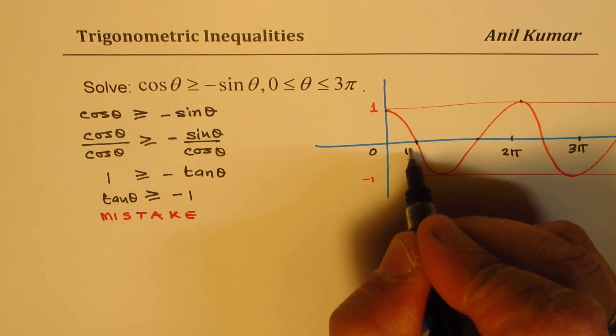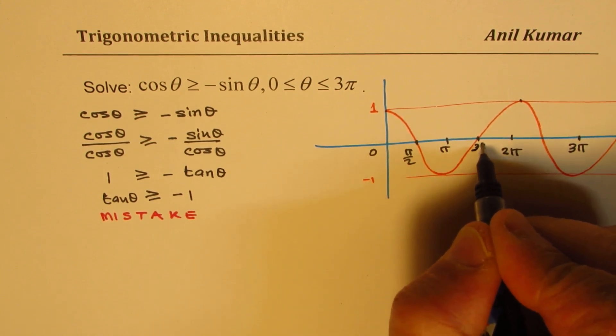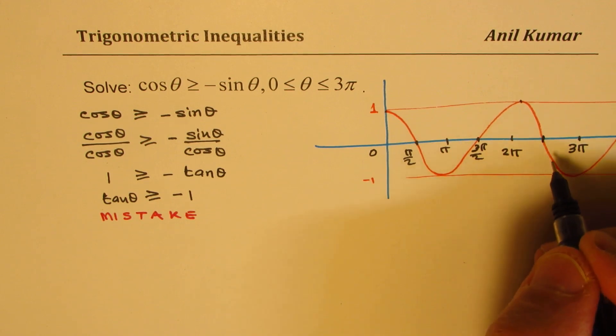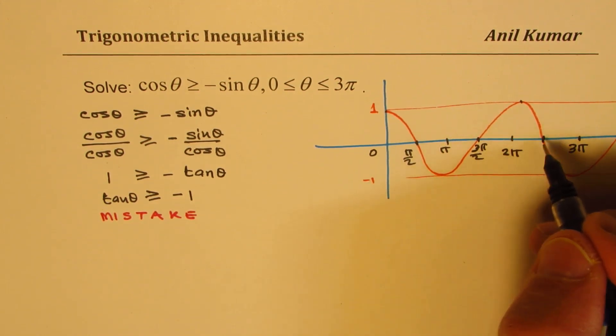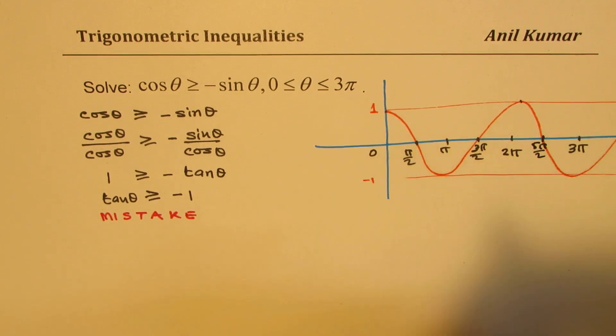This will be like π/2, this is π, 3π/2, 2π, so 3π/2, 4π/2, 5π/2. Like this you could get those values.